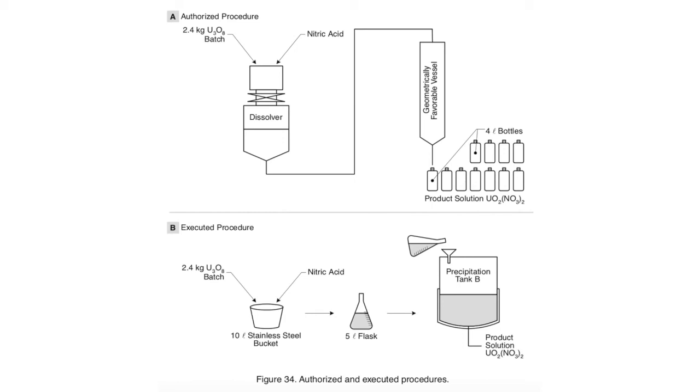Their operation involved dissolving uranium scrap into several small favorable geometry tanks, then transferring the solution into several favorable geometry columns, and then filling 4-liter bottles with the solution.